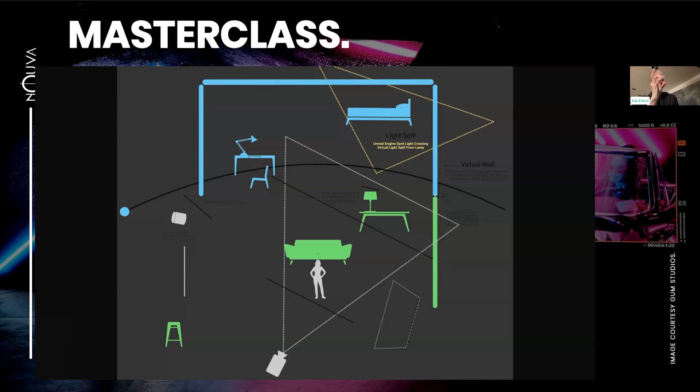This is a top-down diagram of a virtual production stage. Here's the LED wall, this black line, and then the blue objects represent virtual objects. You can see they're all kind of behind the LED wall, some of them are poking through slightly. Something very important is that you can't have virtual objects in a physical space. When you're prepping your Unreal Engine environments, you have to understand that anything that's going to be physical can't be within the space of your virtual elements.